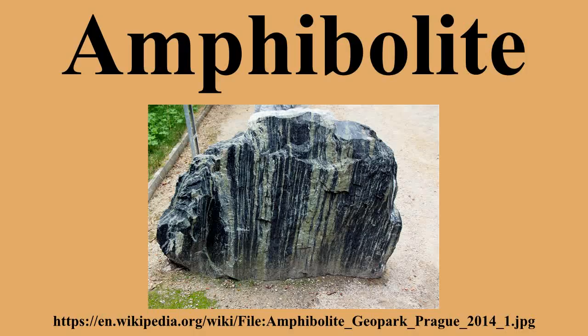Amphibolites need not be derived from metamorphosed mafic rocks, because metamorphism creates minerals based entirely upon the chemistry of the protolith. Certain dirty marls and volcanic sediments may actually metamorphose to an amphibolite assemblage. Deposits containing dolomite and siderite also readily yield amphibolites, especially where there has been contact metamorphism by adjacent granitic masses. Metamorphosed basalts create orthoamphibolites and other chemically appropriate lithologies create para-amphibolites. Tremolite, while it is a metamorphic amphibole, is derived most usually from highly metamorphosed ultramafic rocks, and thus tremolite talc-schists are not generally considered as amphibolites.